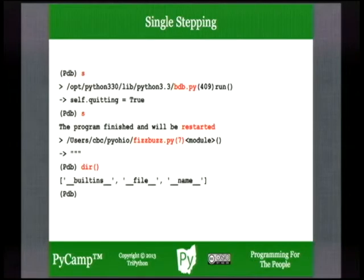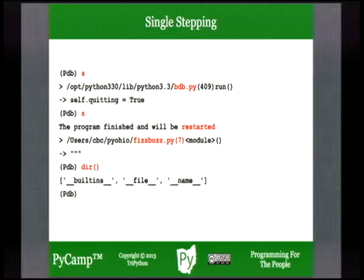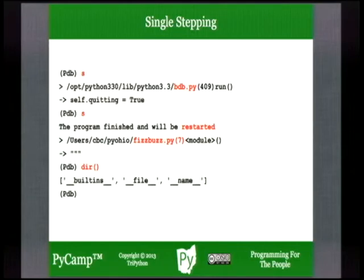If we keep stepping, we're actually going to return from our module object. Python keeps track of the fact that we've loaded the fizzbuzz module and we can actually return from it. When we hit that next 's', we're actually returning from our program. If you list at this point, you will see 'end of file' — it's ready to return because it's reached the end of the file.